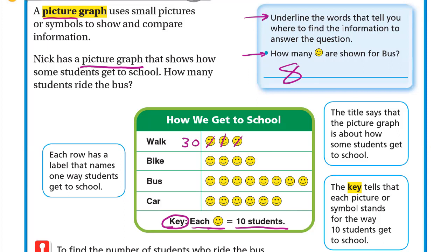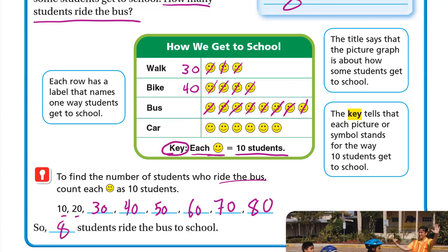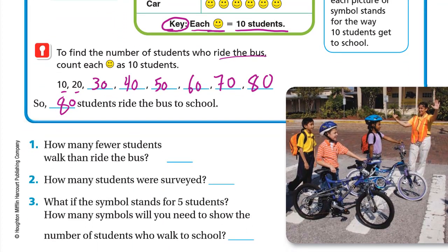Students who go on bike are ten, twenty, thirty, forty, and so on. The question is how many students ride the bus. To find the number of students who ride the bus, count each symbol as ten students. So we count: ten, twenty, thirty, forty, fifty, sixty, seventy, eighty. So eighty students ride the bus to school.